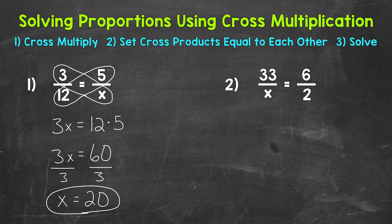One more thing I want to mention about using cross multiplication to solve proportions: don't get too hung up on what numbers to multiply first, or which diagonal you should put on which side of the equal sign — it will all work out the same either way. Just make sure to multiply diagonally and have the equal sign in between your cross products.